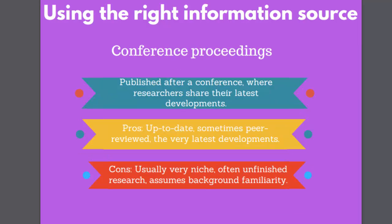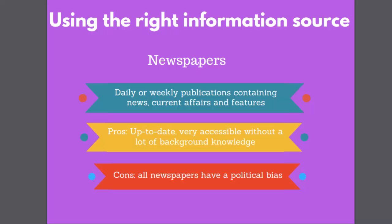Conference proceedings are the output following an academic conference. The advantages are that they present the very latest research. Drawbacks are that they assume a level of expertise and that the research may not be finished. Newspapers, while not scholarly sources, can still provide useful background information and have the virtue of being bang up to date. Articles from broadsheets such as the Guardian, Financial Times, Independent, Telegraph and Times are the best ones to use, as the quality of journalism will be higher than in the tabloids. In all cases, be aware of any political bias.